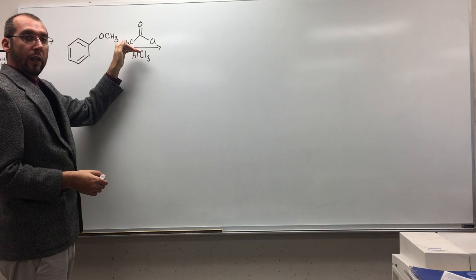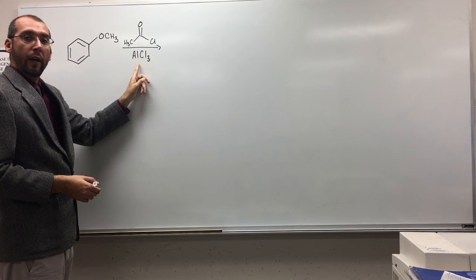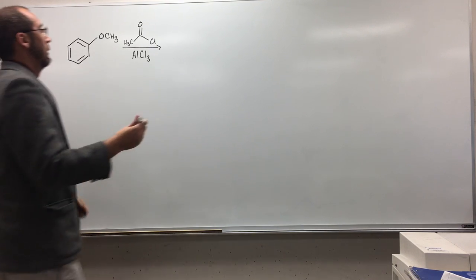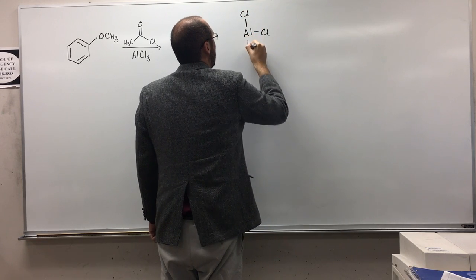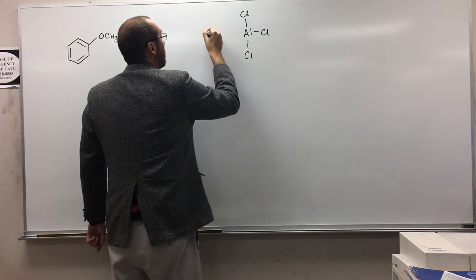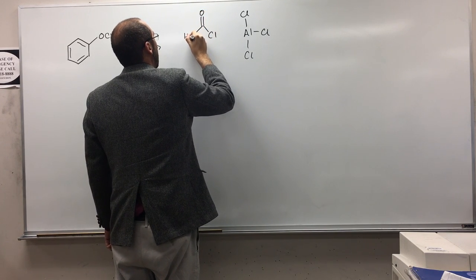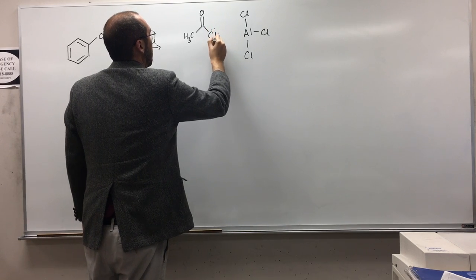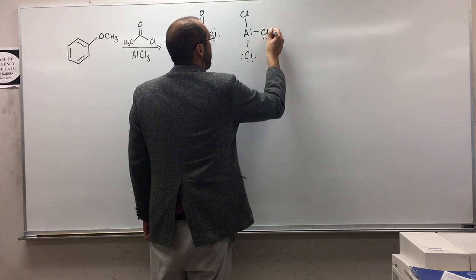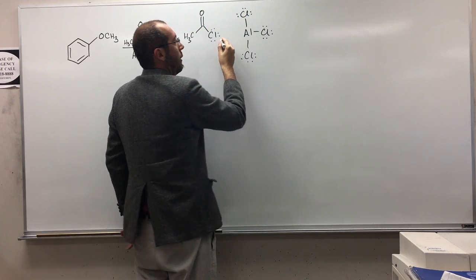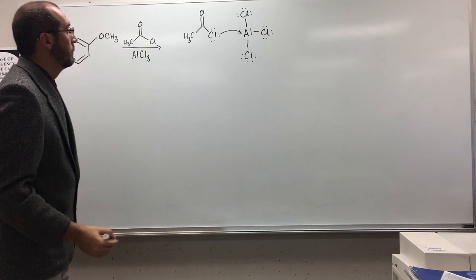So the first thing we're going to do is react the acyl chloride, right, with the aluminum chloride. Okay? So you got these electrons here. They're going to react with the Lewis acid there. The aluminum, like that.